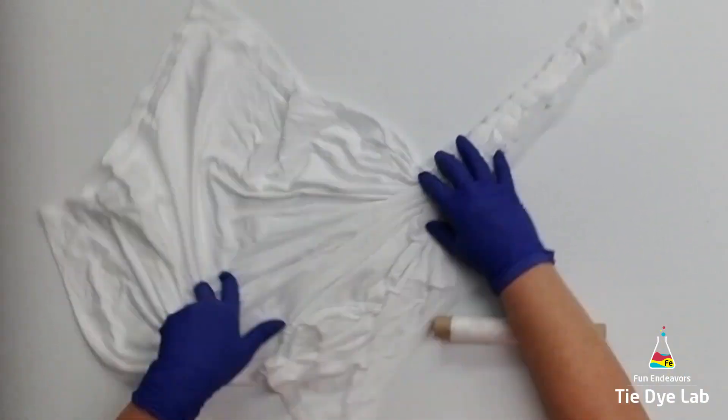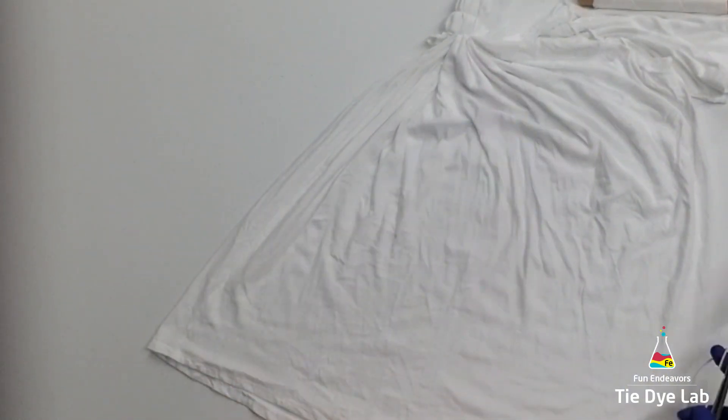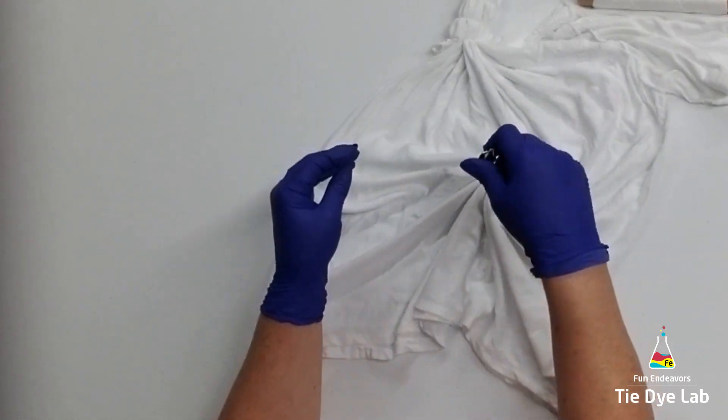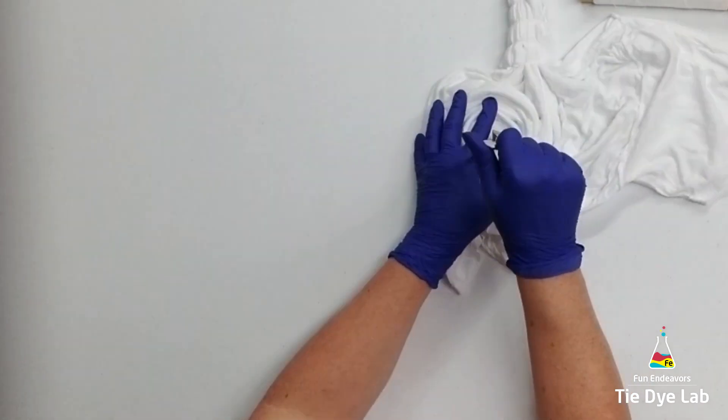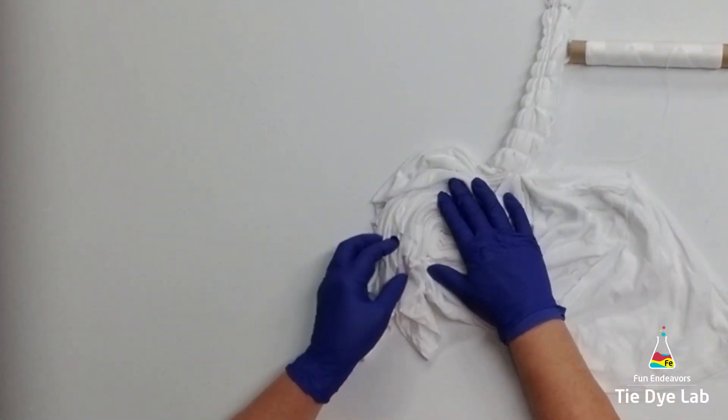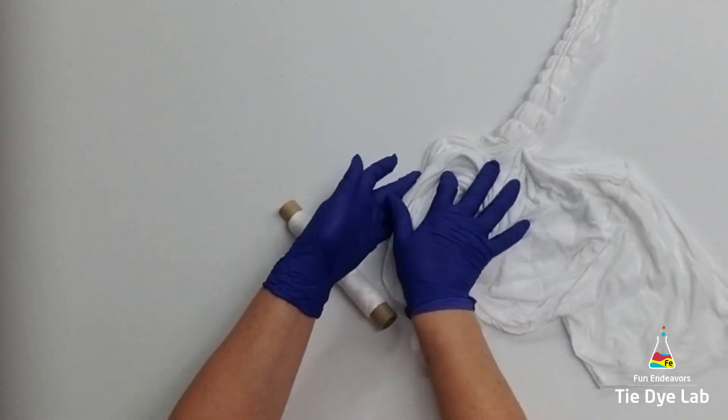Once I get past the sleeve portion, I'm going to make a spiral on the rest of the shirt. So I'm just using my fork to begin a spiral, and I'm going to go ahead and tie this up with some kite string.